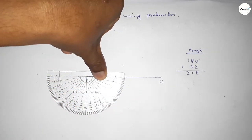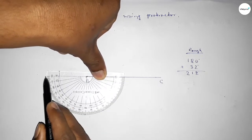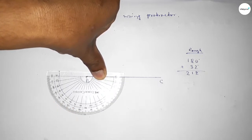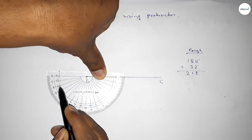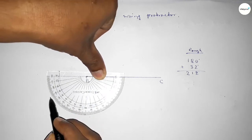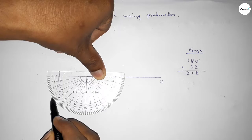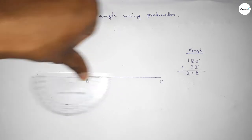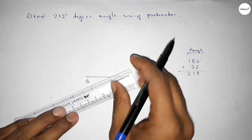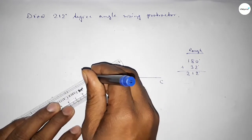Counting angle 32 degree. So this is 180 degree angle, plus this represents 0 degree, 10, 20, 30, 31, 32. So by adding 32 degree angle with 180 degree, then we can get 212 degree angle. Now joining this side.